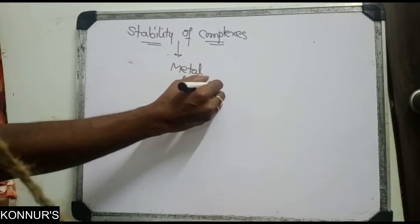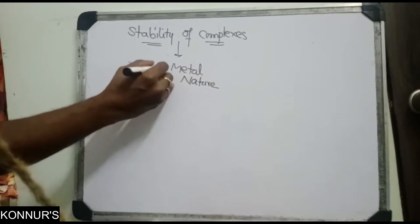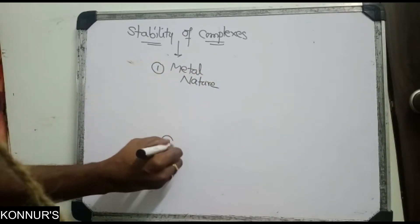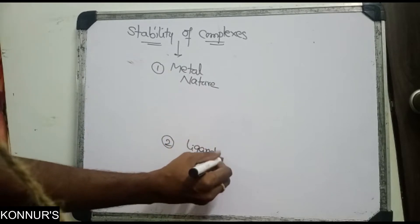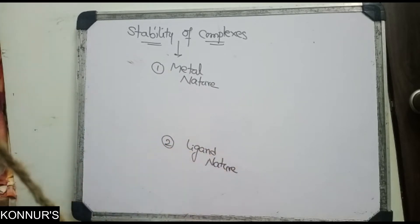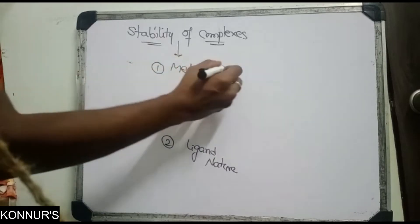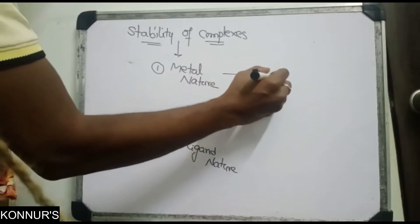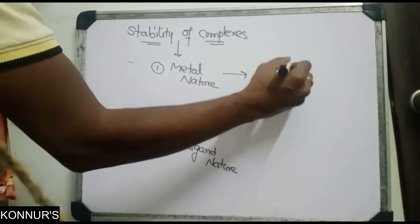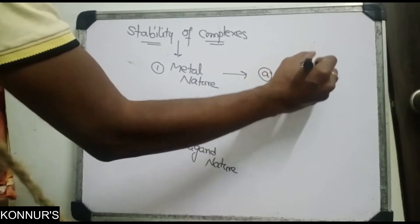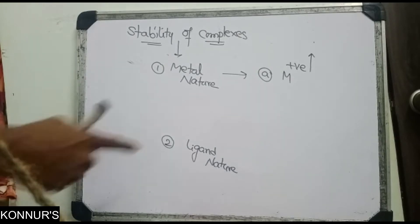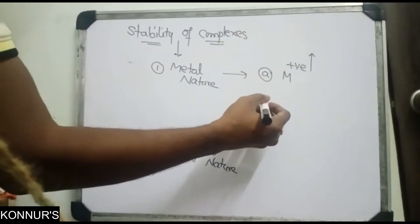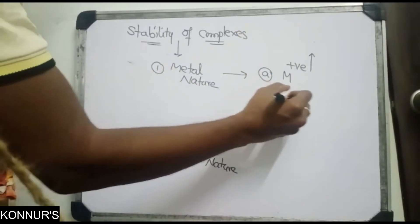Regarding metal nature: the metal must have a high positive oxidation state. When the highest positive oxidation state increases, the metal can better attract electrons from the ligand orbitals.